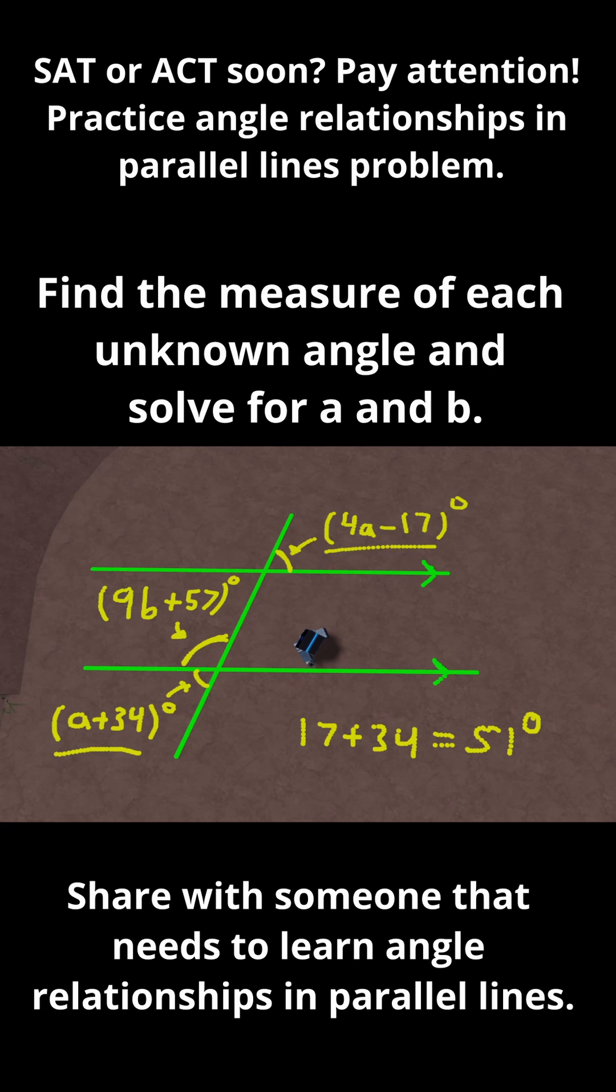Therefore, this angle down here is equal to 51 degrees. And remember, this angle down here and that angle up there are the exact same due to alternate exterior angles. So I can write this whole thing as 51, and let me write that a is equal to 17 since we needed to solve that.